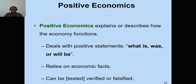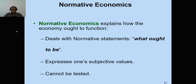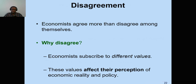Positive economics explains or describes how the economy functions — it deals with what is, what was, or what will be. It relies on facts, and generally people do not argue about it, because if you use the same method to measure the rate of unemployment or inflation, there is no argument. Normative economics, on the other hand, deals with what ought to be or what should be. For example, if we agree the rate of inflation is 10%, what should we do? Economists can disagree on this because it expresses subjective values and cannot be tested.